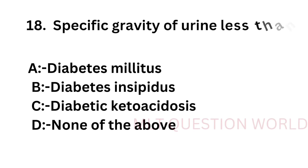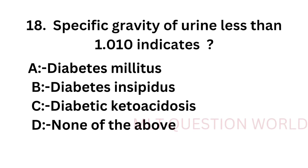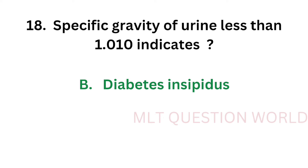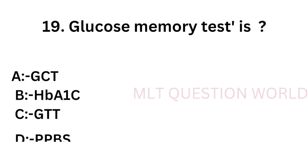Question number 18: Specific gravity of urine less than 1.010 indicates — option A: Diabetes mellitus, option B: Diabetes insipidus, option C: Diabetic ketoacidosis, option D: None of the above. The correct answer is option B, diabetes insipidus. Specific gravity of urine less than 1.010 indicates diabetes insipidus, that is heavy urination due to water and salt metabolism error.